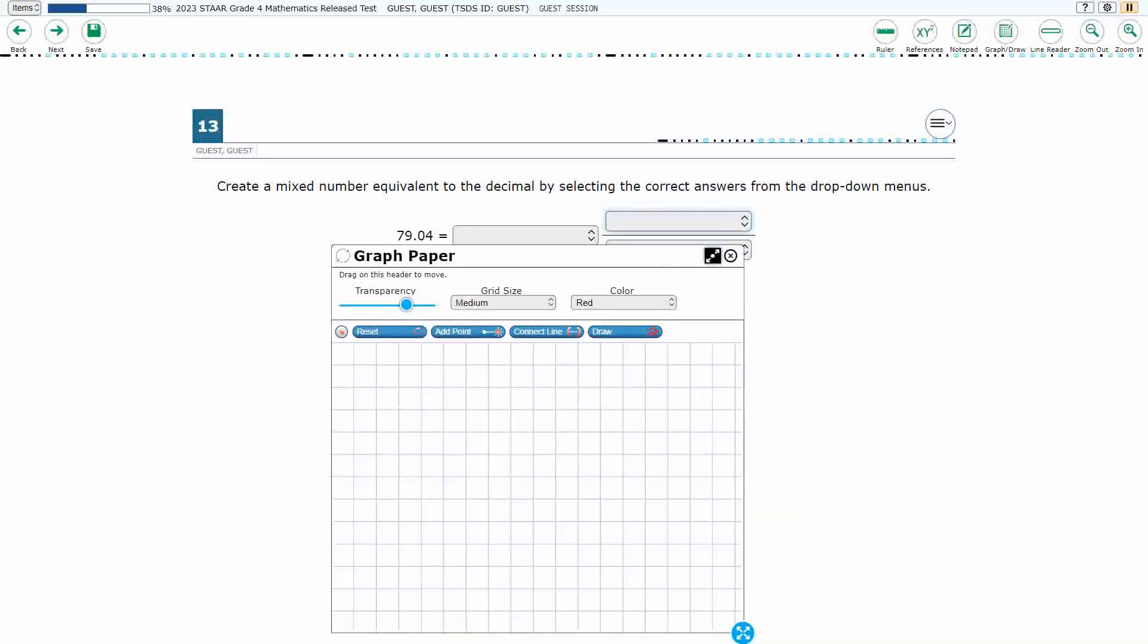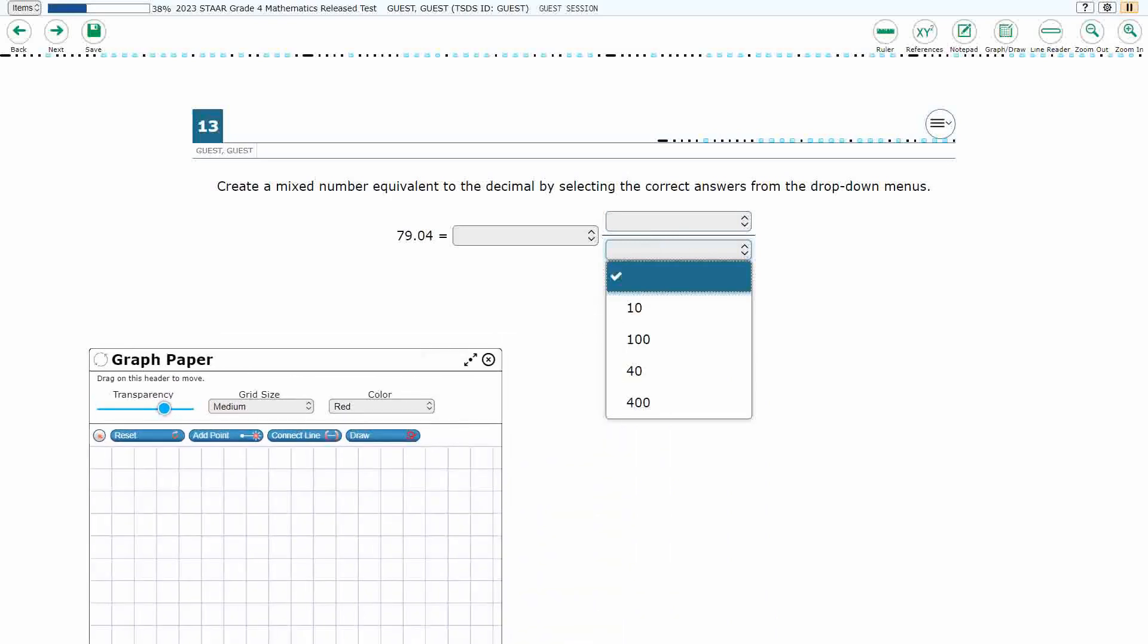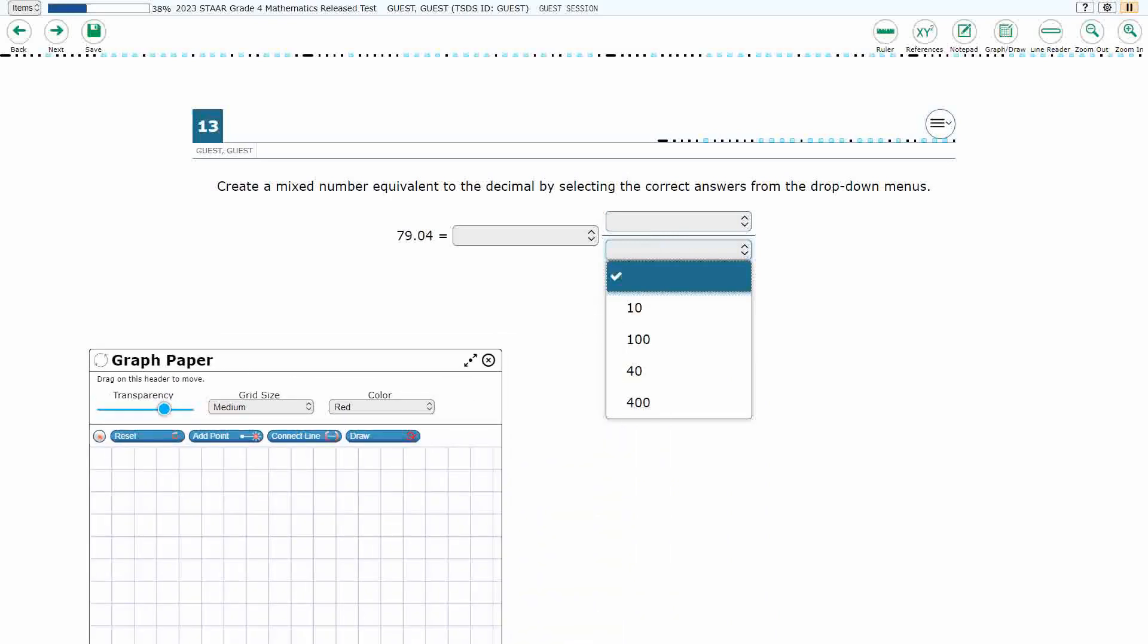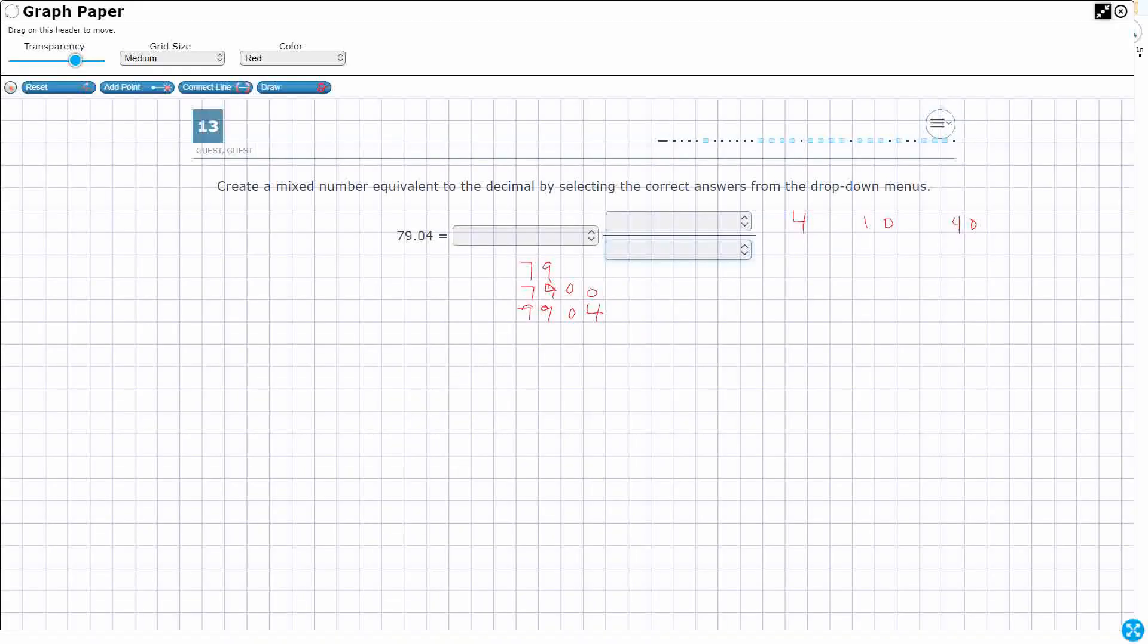And then for my bottom number, what could I have? 10, 100, 40, 400. So 10, 100, 40, 400. All right, so those are just our options.